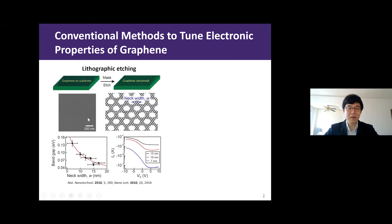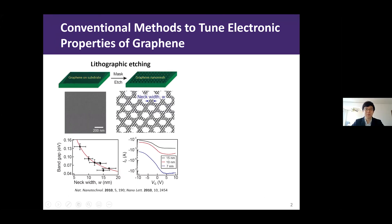The scanning electron microscopy image here shows a so-called graphene nanomesh, which is created after etching the surface of graphene through a lithographic mask. Because of the lateral quantum confinement, this graphene nanomesh exhibits an electronic band gap that can be tuned by the neck width of the nanomesh structure, and exhibits the rectifying behavior needed to create diodes.